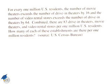Let's take a look at this word problem. For every 1 million U.S. residents, the number of movie theaters exceeds the number of drive-in theaters by 16, and the number of video rental stores exceeds the number of drive-in theaters by 64. Combined, there are 83 drive-in theaters, movie theaters, and video rental stores per 1 million U.S. residents. How many of each of these establishments are there per 1 million residents?